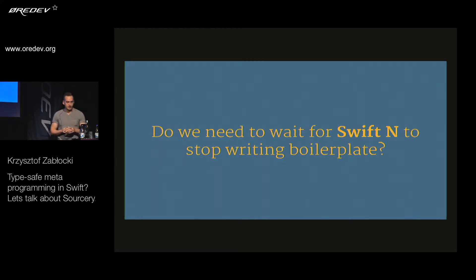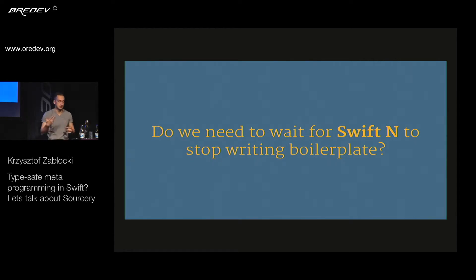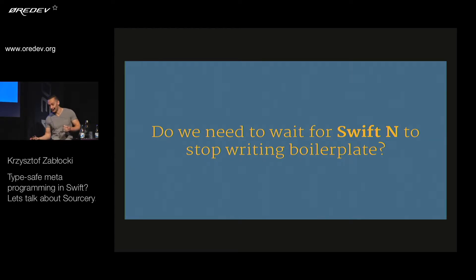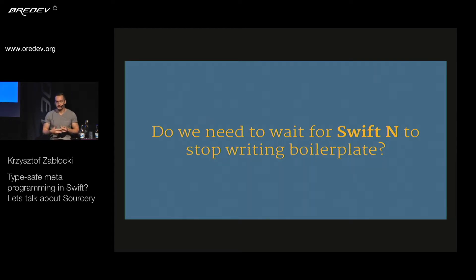Do we need to wait for Swift 6 or later to get macros and metaprogramming features? They have different priorities. We were able to move their priorities a little with adoption of Sorcery, but I'd actually like better build times before metaprogramming, honestly, because there are things we can do as a community and things that have to be done in the language and compiler itself.